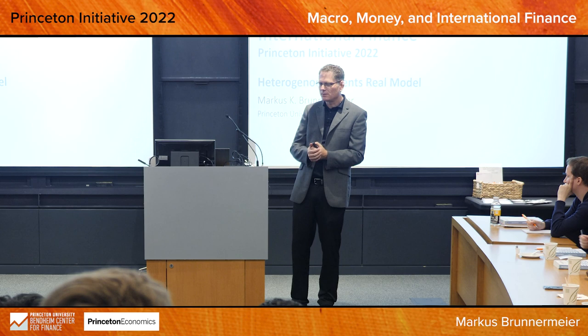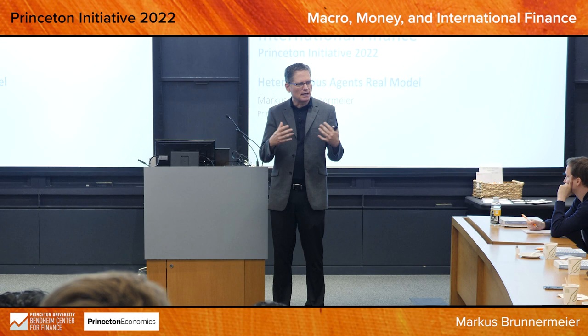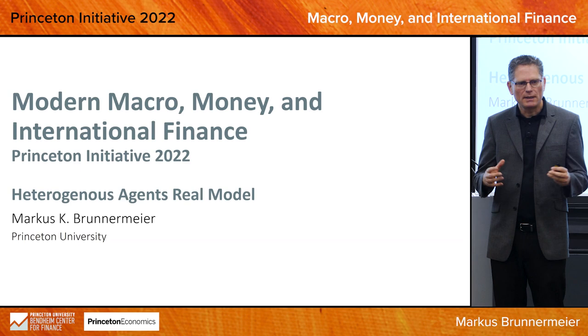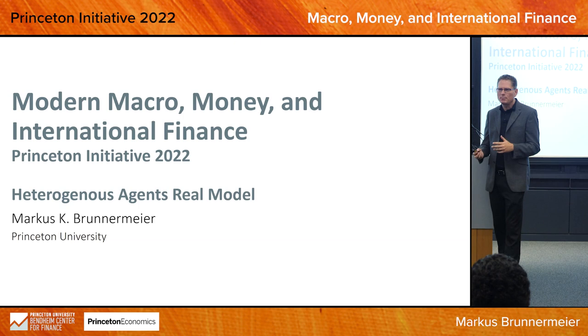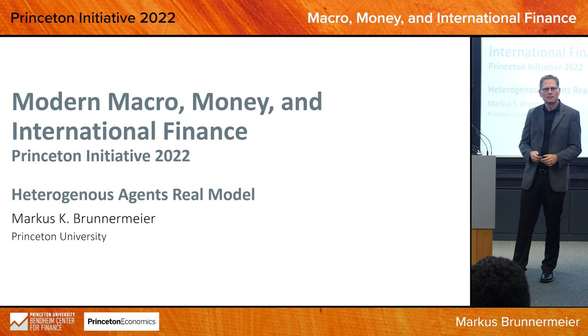Welcome again, everybody, to the Princeton Initiative 2022. What I want to do today is go into some basic models with heterogeneous agents — a real model — and later in the afternoon we'll see some nominal models where there's also a price level and monetary aspects. For the beginning, I just want to do two-sector models with heterogeneous groups and some financial frictions across them. But before I do this, I'd like to go a little bit back in history, given that we have so many potential historians in the audience, and give you a brief history of economic thought in macro-finance.